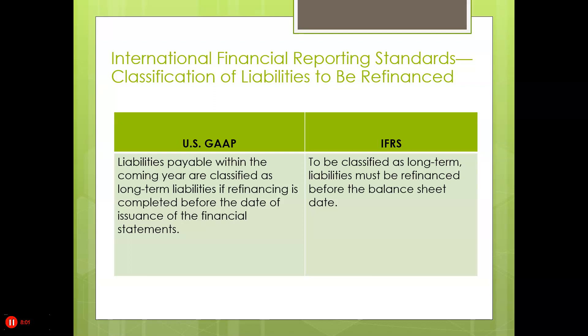What's the difference between GAAP and the international standard? Under US GAAP, liabilities payable within the coming year are classified as long-term liabilities if refinancing is completed before the date of issuance of the financial statements. Under the international standard, they have to have already been refinanced before the balance date of the financial statements. That ends Part 2 of this Chapter 13 presentation. If you have any questions, email me.